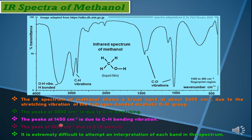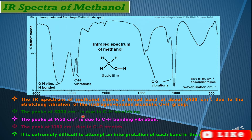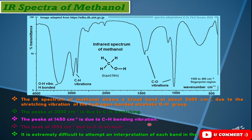The peak at 1450 cm⁻¹ is due to the carbon-hydrogen bending vibration. This is approximately the 1450 cm⁻¹ peak. If we count here — 1000, 1100, 1200, 1300, and 1400 — this is the roundabout peak which you can see. It can be in this region. If you look at this peak, this is approximately 1450 cm⁻¹ corresponding to the C-H bending vibration.